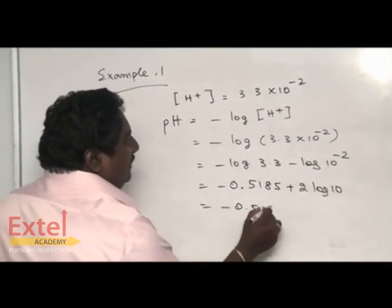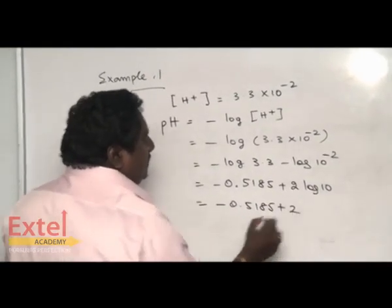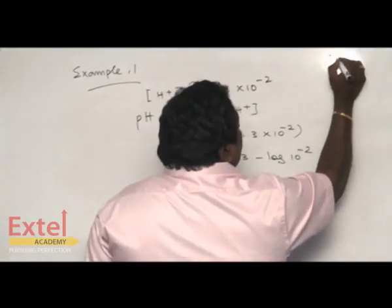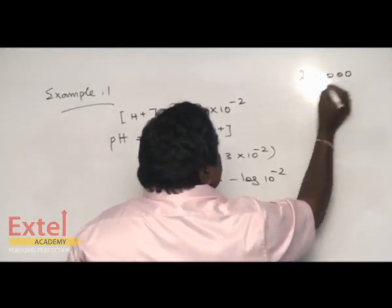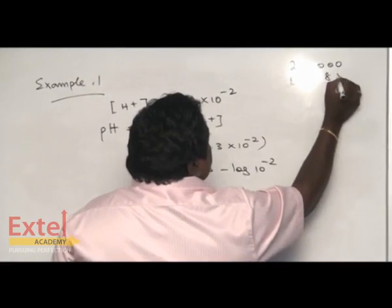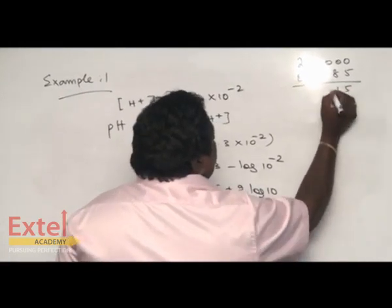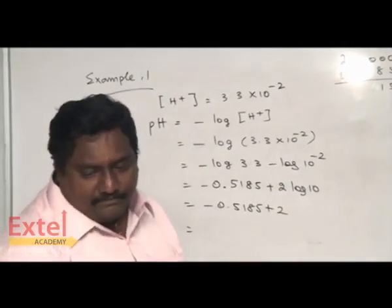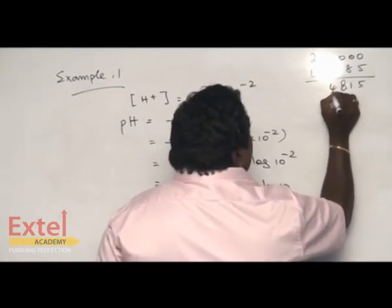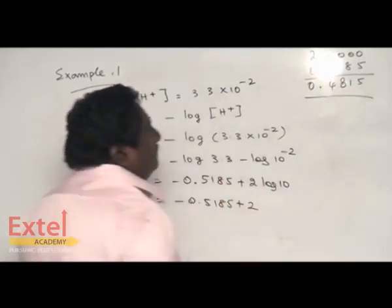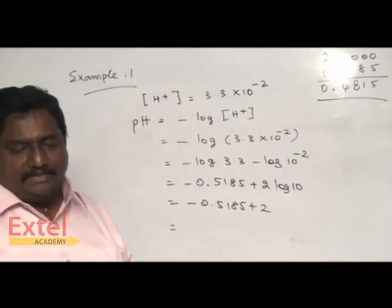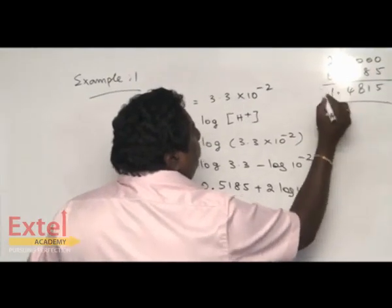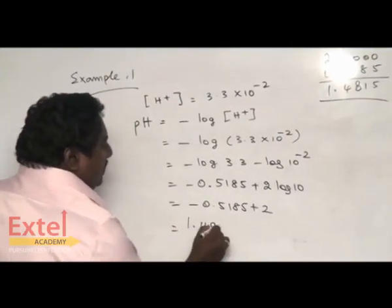The expression will be like this. Now find the difference between these two. 2.000 minus 0.5185. Upon subtraction you are getting 1.4815. Upon subtraction you are getting 1 here. So the answer is 1.48.